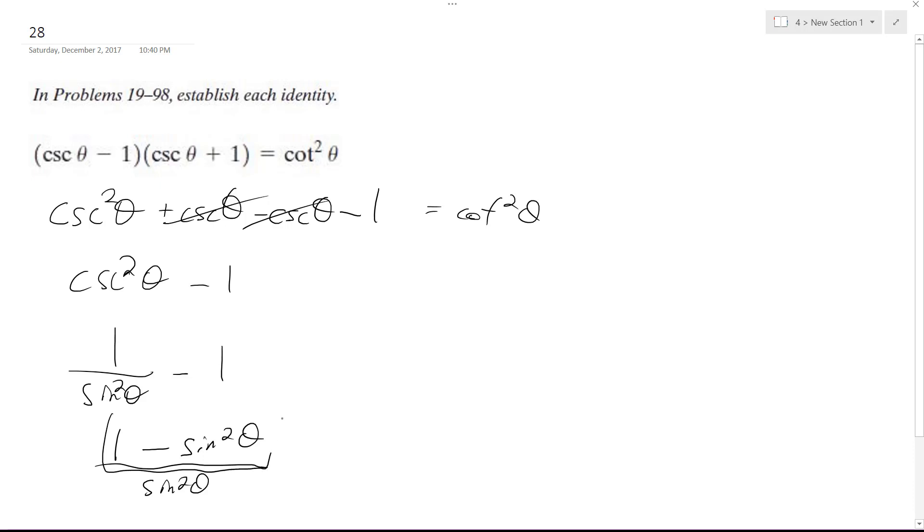This is a trig identity. It's equal to cosine squared theta. So I get cosine squared theta over sine squared theta, which is equal to cotangent squared theta.